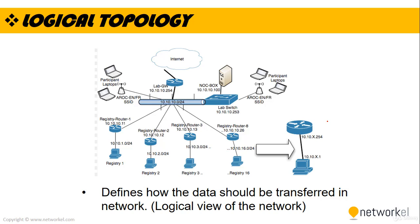Logical topology is the arrangement of devices on a computer network and how they communicate with one another. Logical topologies describe how signals act on the network. In a logical topology view, you can see IP addresses, tunnel types, subnet masks, and similar information — this is the logical view of the topology.